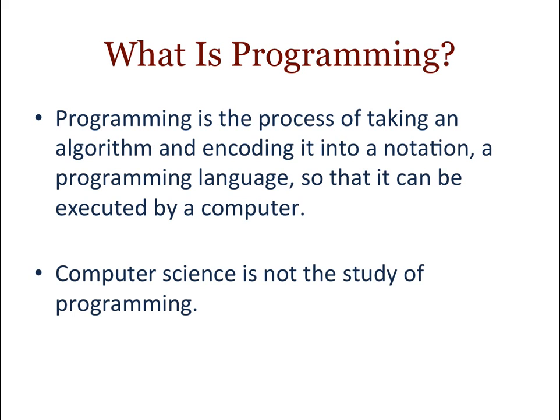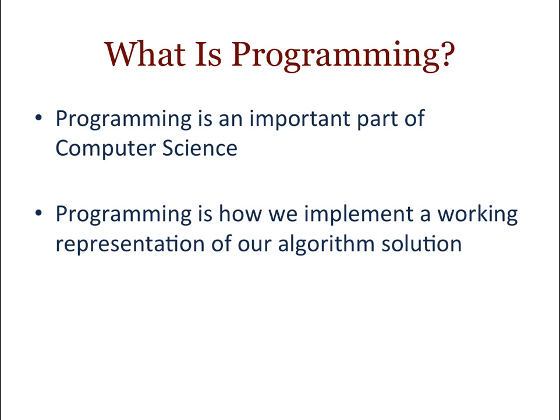Programming is the process of taking an algorithm and encoding it into a notation — a programming language — so that it can be executed by the computer. Computer science is actually not the study of programming; it's the process of developing algorithms. Programming is an important part of computer science, but it's not the end-all. It's like writing — it's important to know English and put sentences together, but writing is not just about that. Programming is how we implement a working representation of our algorithm, and it's actually quite creative — just like writing is creative.